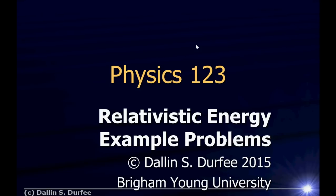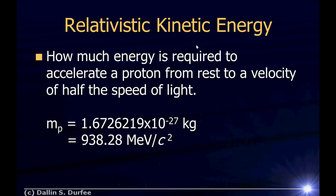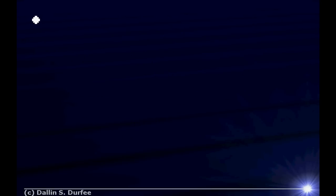Let's work some problems with relativistic energy. First of all, how much energy is required to accelerate a proton from rest to a velocity of half the speed of light? I'm giving you the mass of the proton both in kilograms and in MeV over c squared. Which one should you use? Well, what do you want your answer in — joules or in electron volts? You can work either way.